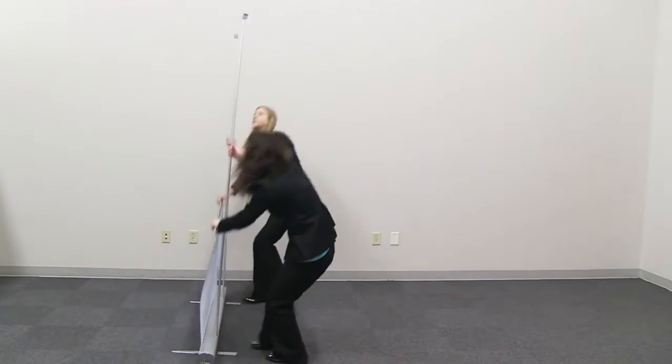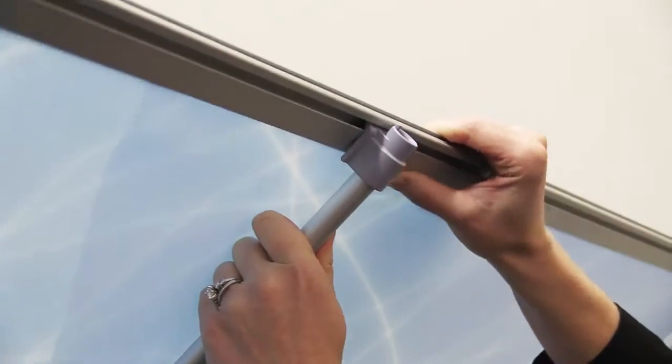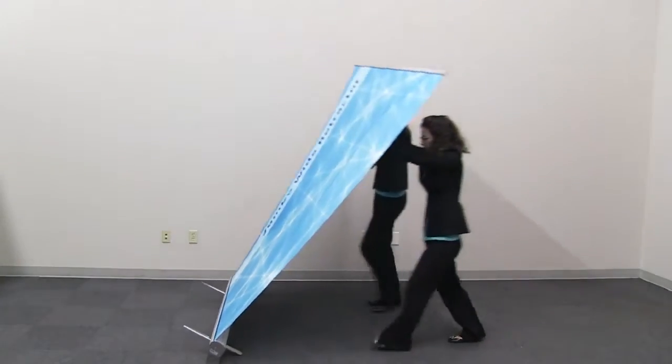In tandem with another person, lean display back and gently pull up the banner rail. Insert banner rail onto the poles' grooves.